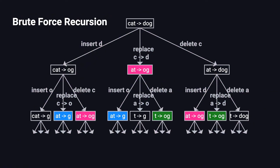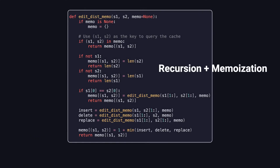Brute force recursion does a ton of repeat calculations, and that's exactly where we can optimize it by using dynamic programming. One way is top-down dynamic programming, or memoization. That means we still use recursion, but we store results of subproblems we've already solved. If we see the same subproblem again, we just reuse the stored result instead of computing it again. After applying memoization, the time complexity drops from exponential to O(M × N), where M and N are the lengths of the two strings. The performance improves dramatically.